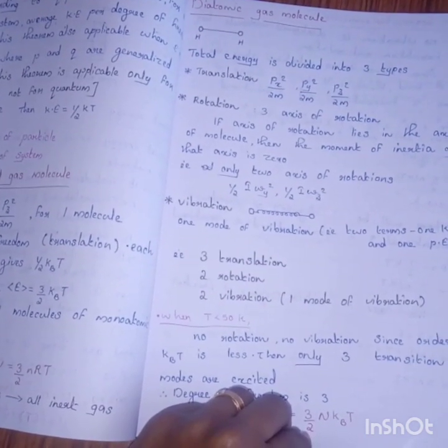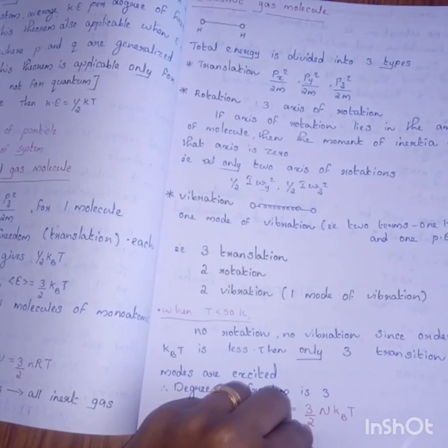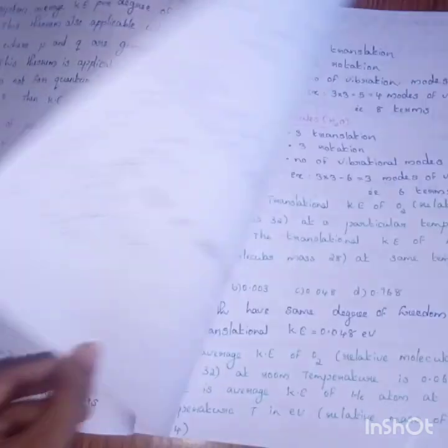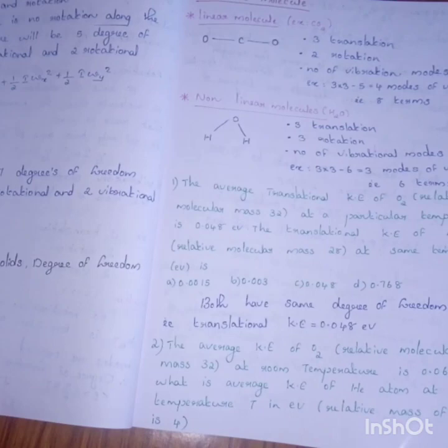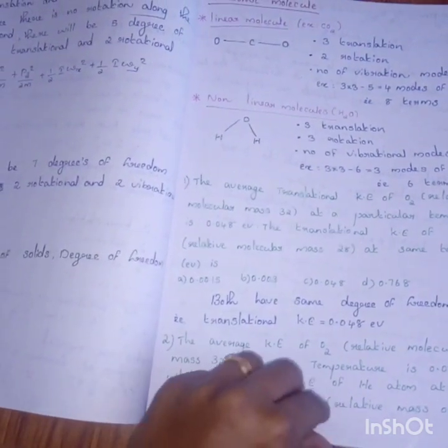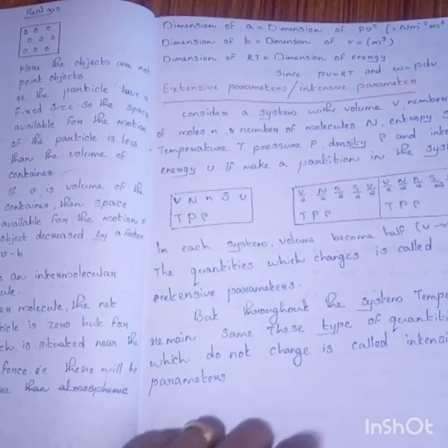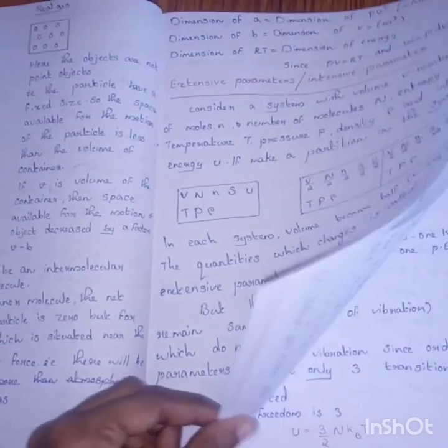time-consuming subjects are mathematical physics, quantum mechanics, classical mechanics, statistical mechanics, and electrodynamics. If we set one month time for mathematical physics, try to complete revision of that in one month.